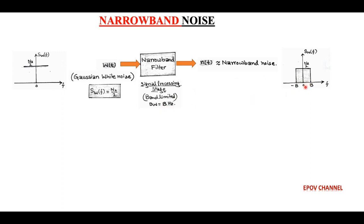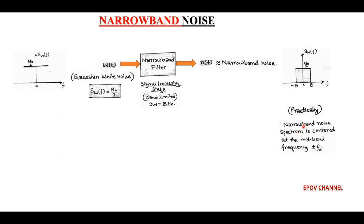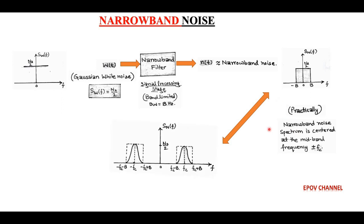As shown in the figure, the power spectral density of filtered noise is centered at the origin. But practically, in a communication system using the modulation process, the spectrum of narrowband noise is shifted and centered at the mid-band frequency of ±fc. The dotted line represents an ideal curve.